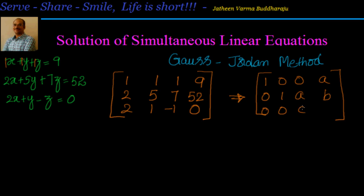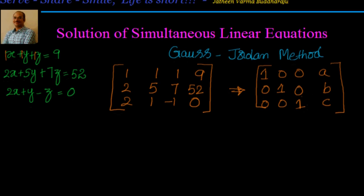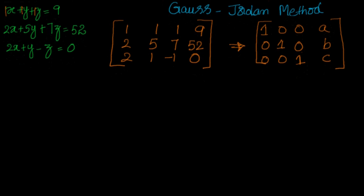You can see that the equations transform from x plus y plus z equal to 9 into x equal to a, y equal to b, and z equal to c. So we get 1 0 0, 0 1 0, and 0 0 1 on the left side. Since y and z become 0 in the first equation, it directly gives x equal to a, y equal to b, and z equal to c.